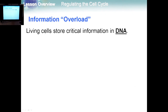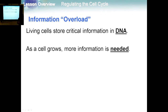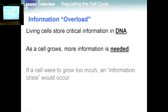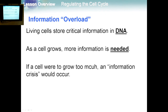Let's start with information overload. Living cells store critical information in the DNA, and as the cell grows, there is a demand for more information. If a cell were to grow too much, an information crisis would occur. The critical information in the cell is the DNA. Once the cell is growing, it needs more information, more DNA. If there is not enough DNA, there will be an information crisis.